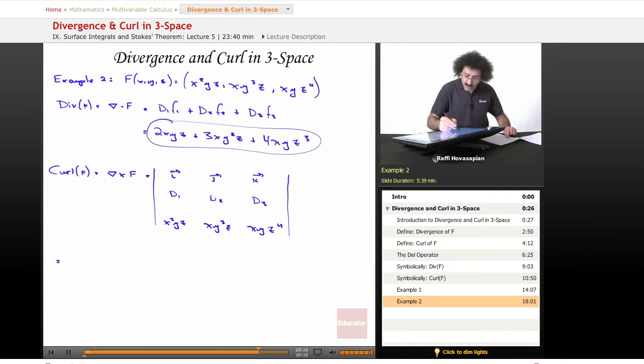Okay, so now let's go ahead and expand along the first row. It's going to be the derivative with respect to y of this minus the derivative with respect to z of this. The derivative with respect to y of this is xz to the fourth, xz to the fourth. The derivative with respect to z of this is xy cubed. This is the i component.